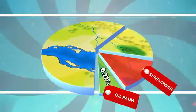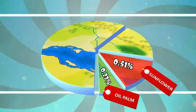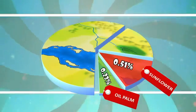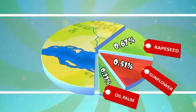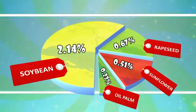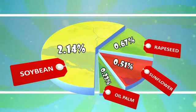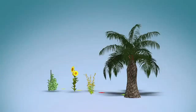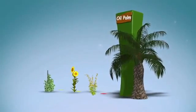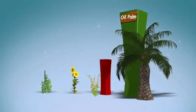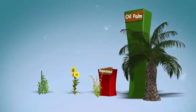Compared to sunflower at 0.51%, rapeseed at 0.67%, and soybean occupying the most at 2.14%, the oil palm needs the least land yet it provides the highest yield of oil compared to other oil-bearing crops.